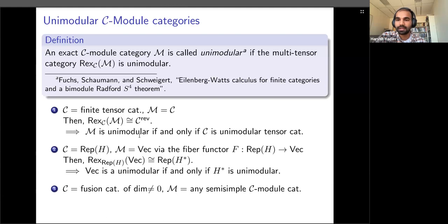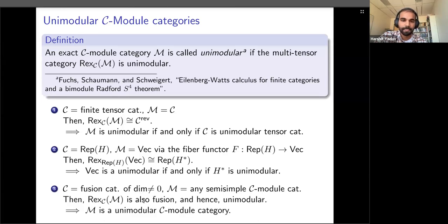What does this notion mean in the semisimple case? We know that if we have a fusion category — a semisimple tensor category — it is unimodular. If we take C to be a semisimple tensor category (fusion category) with non-zero dimension and take any semisimple module category, then we can show it is a unimodular module category. This generalizes the earlier observation that semisimple Hopf algebras are unimodular.